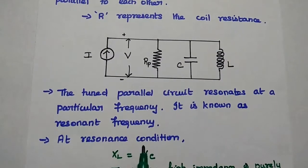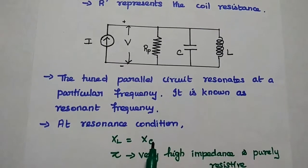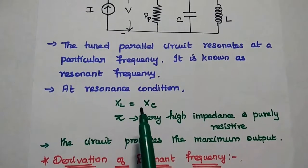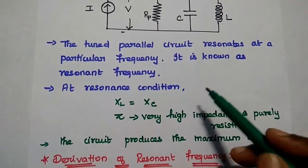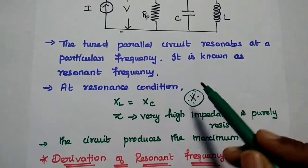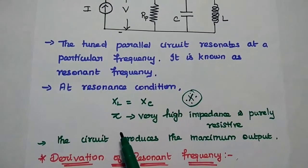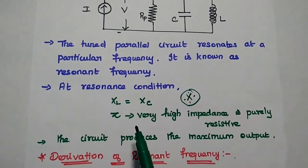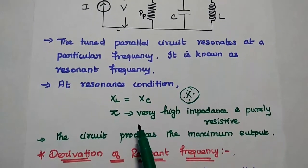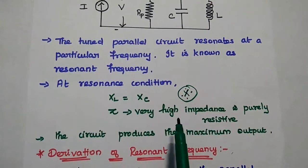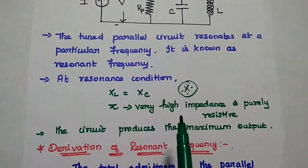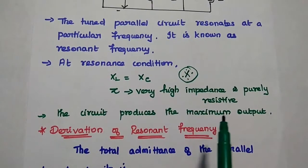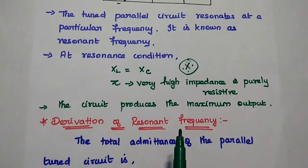This is also known as the resonant frequency. At this resonant condition, the inductive reactance is equal to the capacitive reactance — this is very important. At resonant frequency, inductive reactance equals capacitive reactance, meaning both cancel each other. At that time, the impedance is purely resistive and provides very high impedance in the circuit. Hence, the circuit produces the maximum output at resonant condition.